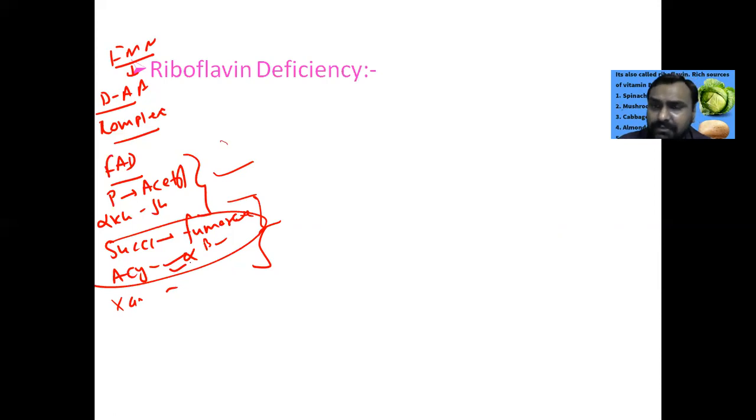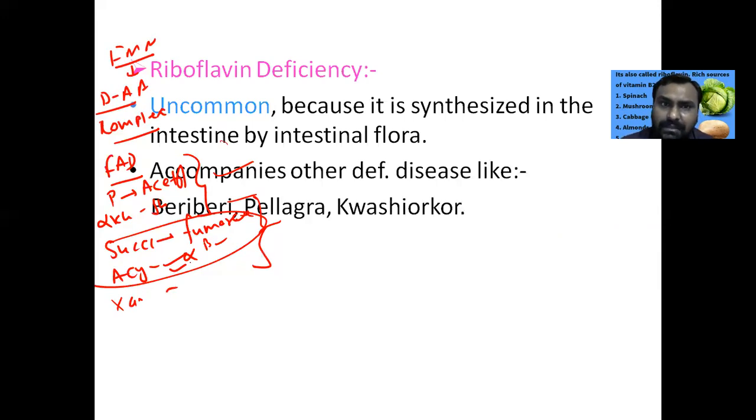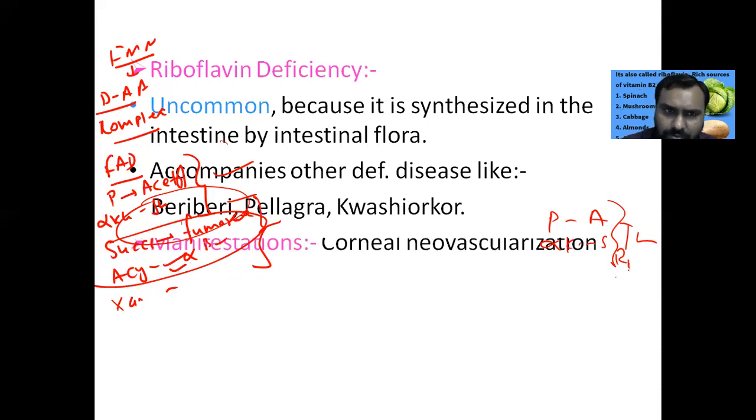If there is a deficiency of vitamin B2, when a poor person who doesn't get enough spinach, mushrooms, cabbage, potato, almonds, egg, or milk, then he may develop riboflavin deficiency. As such, it is uncommon because our intestinal flora can also synthesize it. Upon this riboflavin deficiency, as we know pyruvate to acetyl-CoA and alpha-ketoglutarate to succinyl-CoA all require thiamine, riboflavin, and niacin. So all these beriberi, pellagra, kwashiorkor, they are simultaneously together usually.